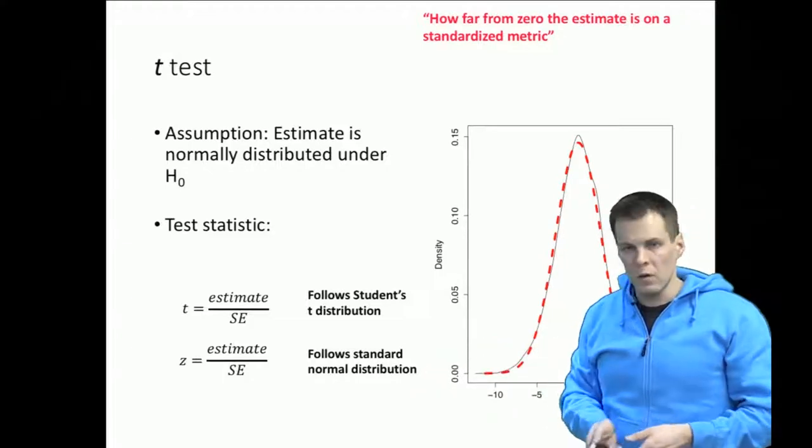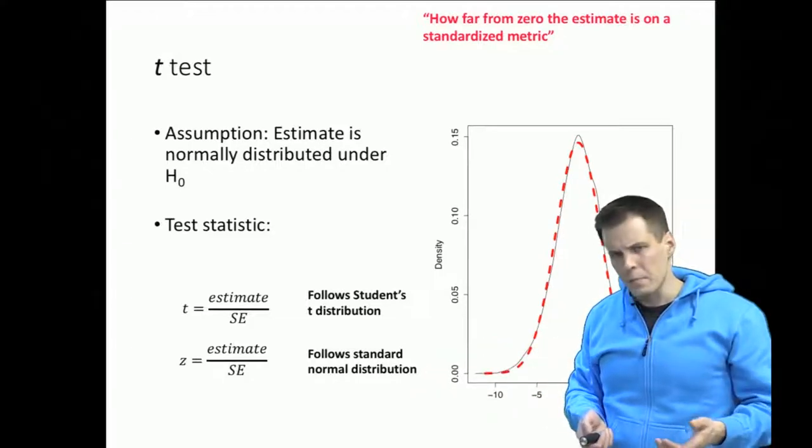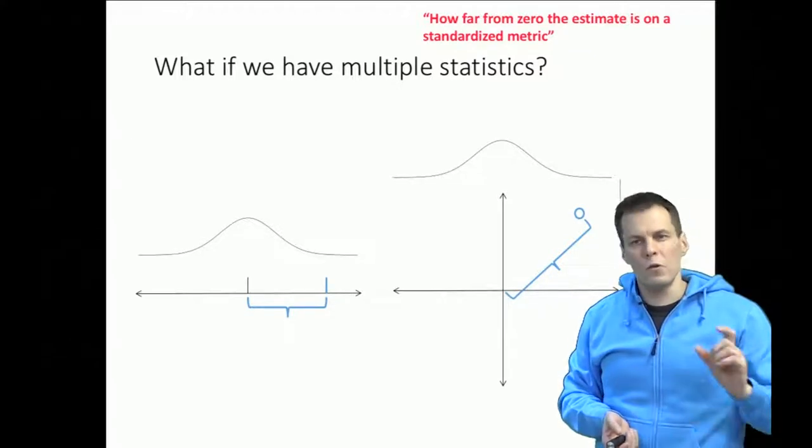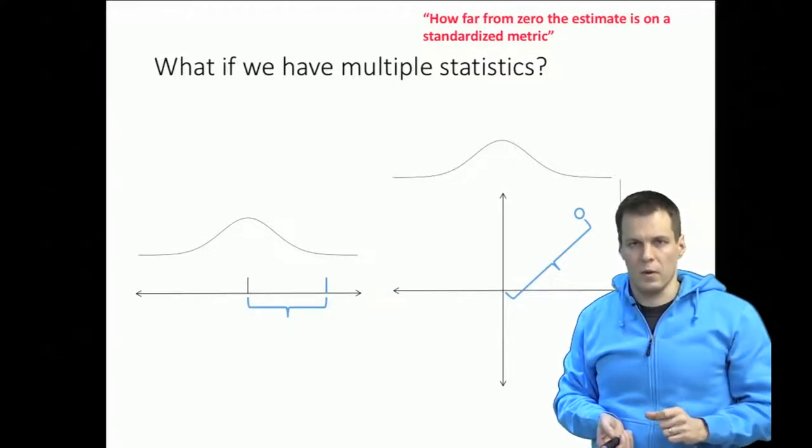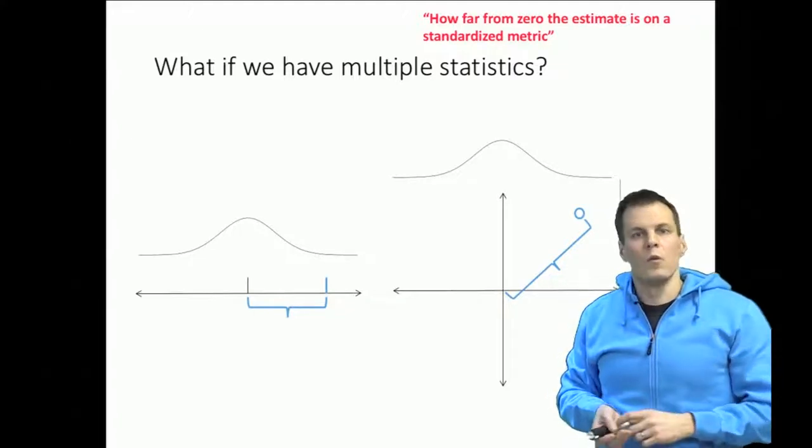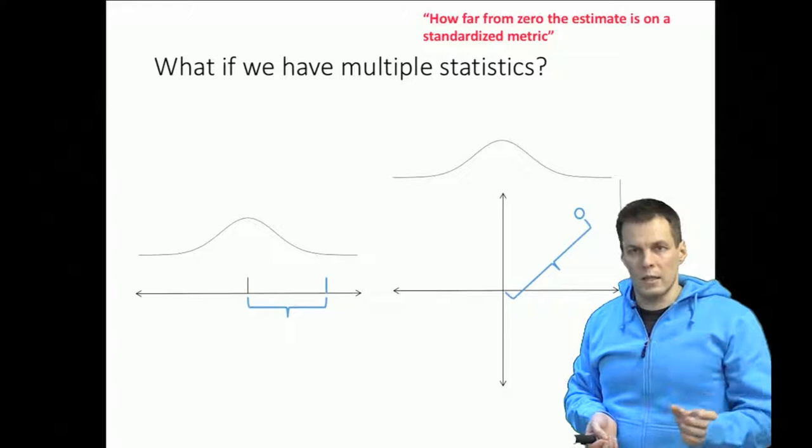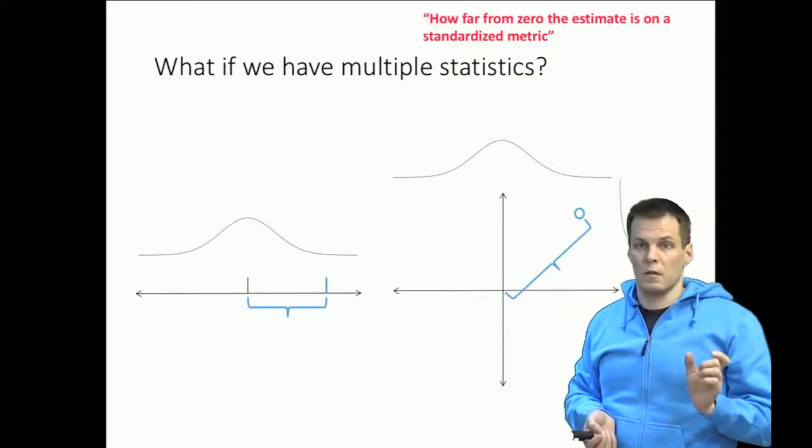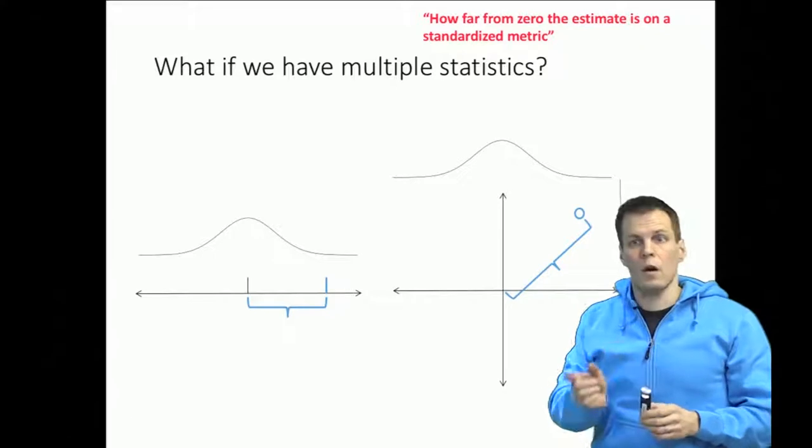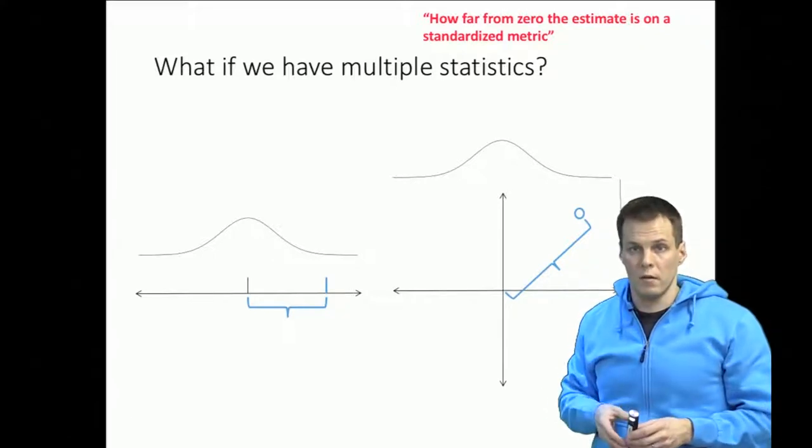So what if you have multiple statistics? Sometimes we want to test if two regression coefficients for example are different from zero. At the same time so we want to know that the null hypothesis that both regression coefficients are exactly zero and if either one of those is non-zero then we reject the null.